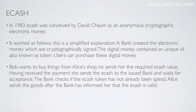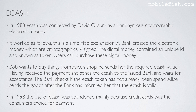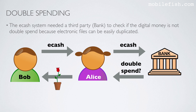Alice sends the goods after the bank has informed her that the eCash is valid. In 1989, the use of eCash was abandoned mainly because credit cards became the consumer's choice for payment. The eCash system needed a third party — in this example a bank — to check if the digital money is not double spent, because electronic files can be easily duplicated. In this drawing, Bob sends Alice digital money, and Alice sends that digital money to the bank to check if it has not been double spent.